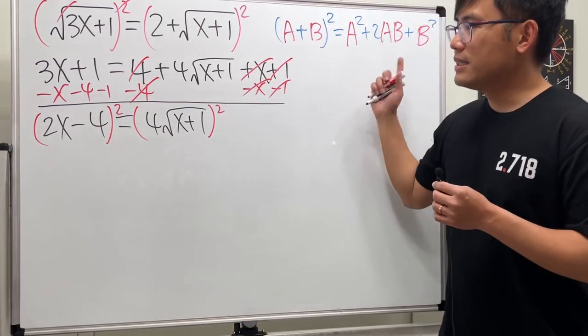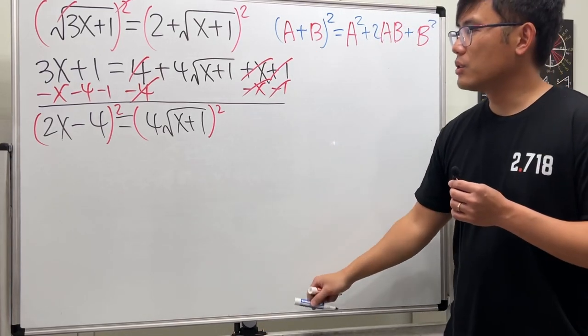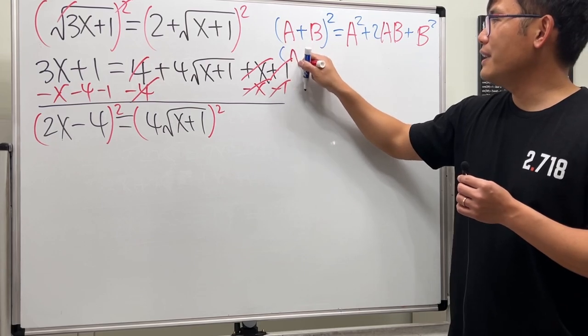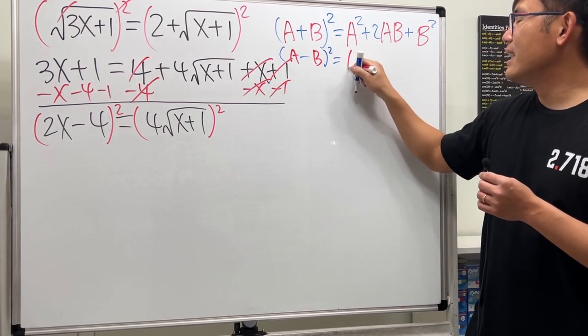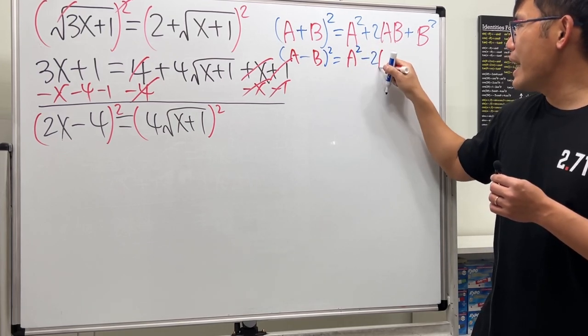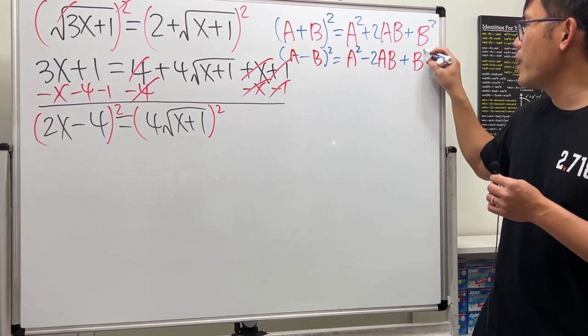On the left-hand side, we'll be using a similar formula, but instead of the plus, we have the minus. So let me just write this down again for you guys. So if we have a minus b, and if we square that, this is a square minus 2ab plus b square.